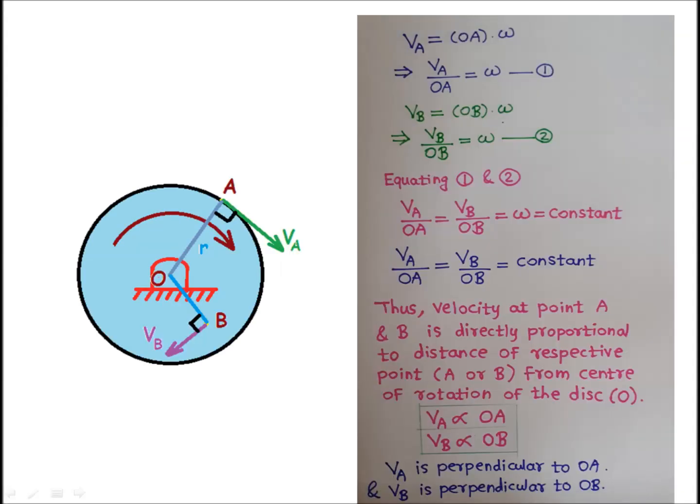Now, once again, quickly we will go through what we have seen. For VA, we can write VA equals OA into omega, so we will get the relation VA upon OA equals omega. Let us say this is equation number 1. For VB, we can write VB upon OB equals omega. Let us say this is equation number 2.